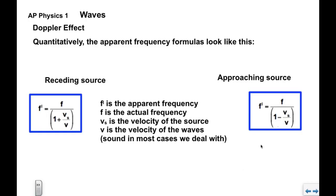You can see that in this case, the denominator of the approaching source is less than 1, which means the approaching apparent frequency would be greater than F. In this case, the denominator is greater than 1, which makes this receding apparent frequency less than actual.